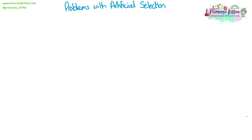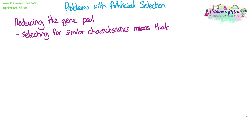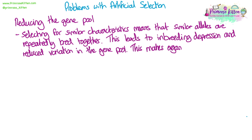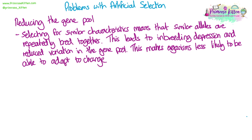We need to know the problems with artificial selection. One of the main problems is that it reduces the gene pool — the number of alleles for each gene in a population. By selecting for similar characteristics again and again over generations, we ensure similar alleles are repeatedly inherited, which is what we want, but that can mean we end up with a really narrow selection of alleles in the population. This leads to inbreeding depression, where reducing variation in the gene pool means low genetic variation, making the population less able to adapt to change and potentially wiped out by a single disease, as there's unlikely to be any resistance genes present.